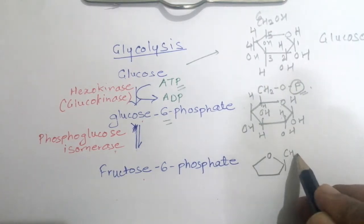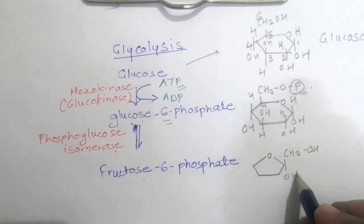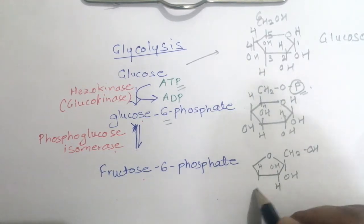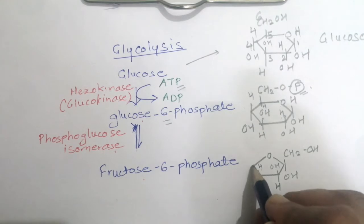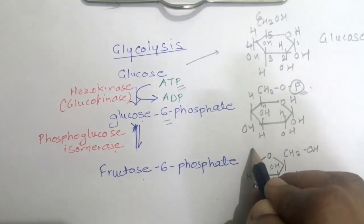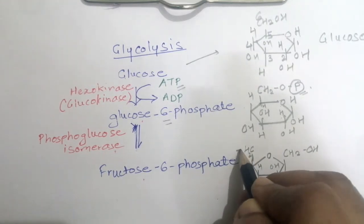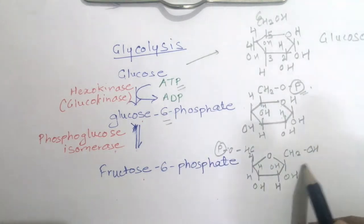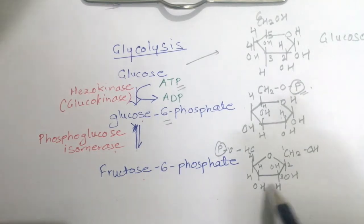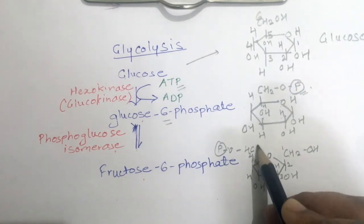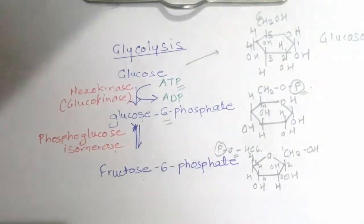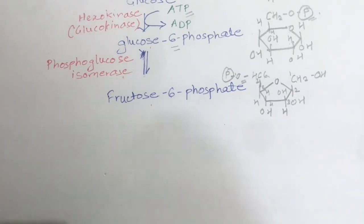In the structure of fructose, the first carbon is not included in the ring structure — it is outside, unlike glucose. So the first carbon and the sixth carbon are both outside the ring structure: 1st, 2nd, 3rd, 4th, 5th carbons are in the ring, and the 6th carbon is outside. The phosphate group is attached to the sixth carbon of fructose, which is why it is called fructose-6-phosphate.